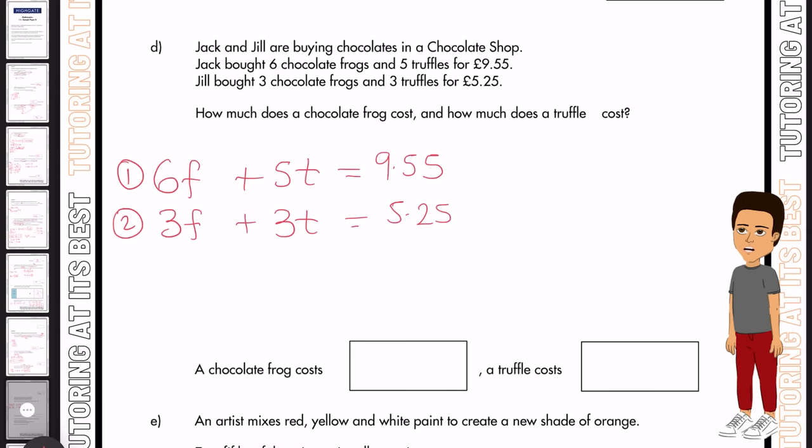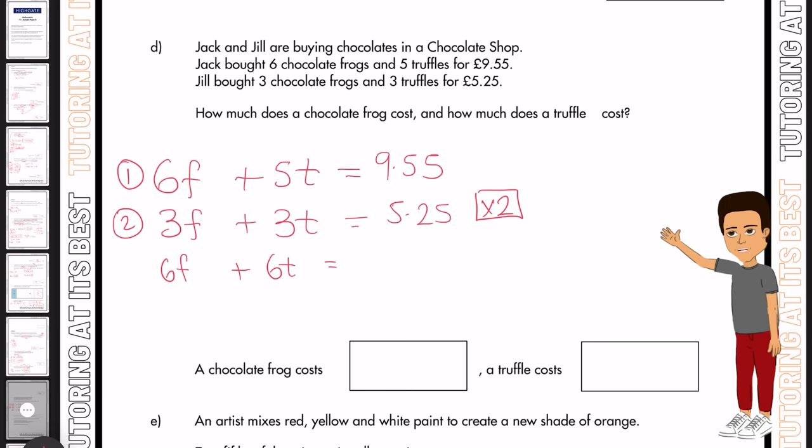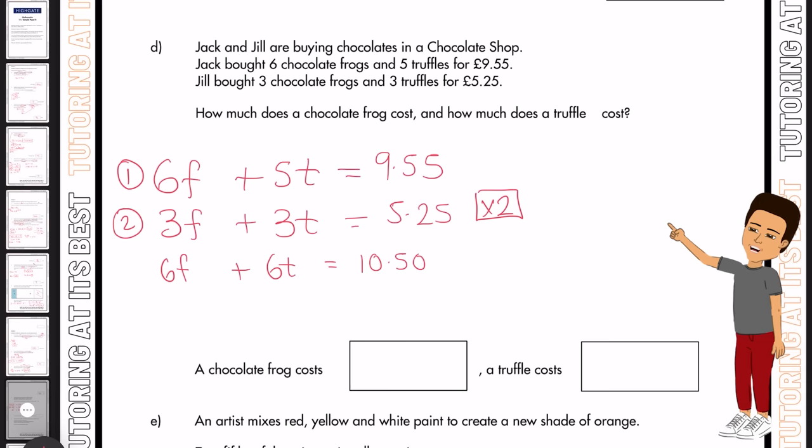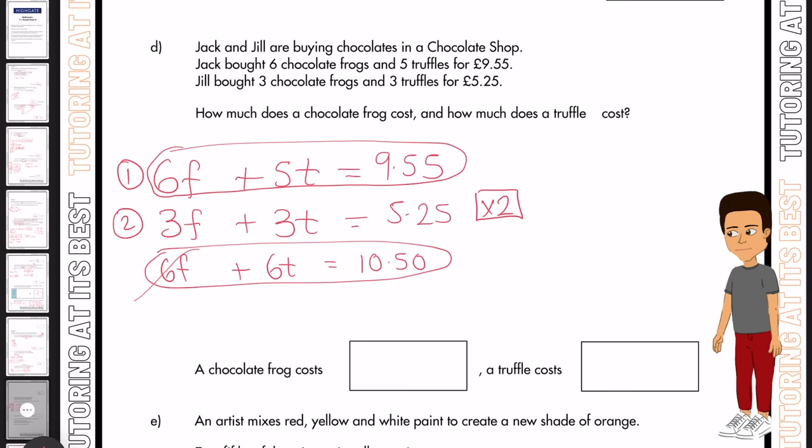Our next aim is to make either the chocolate frogs the same or the truffles the same. I'll make the chocolate frogs the same. So I'll have to multiply this by two, which gives us 6f plus 6t, which equals £10.50. And then as equation two is now larger than equation one, I'm going to subtract equation one from the new equation two. So 6f and 6f is nothing. But 6t take away 5t gives us t. And £10.50 take away £9.55 gives us 95p.